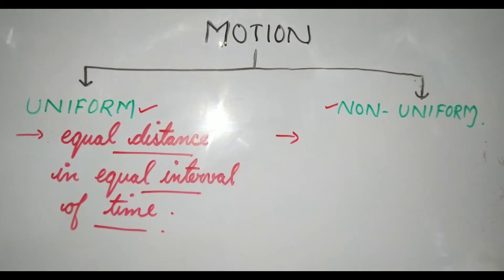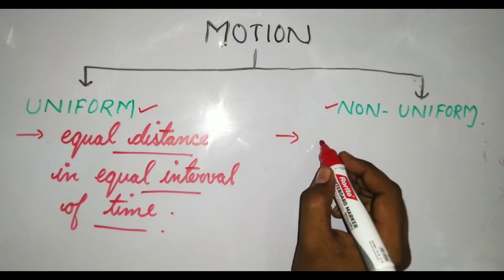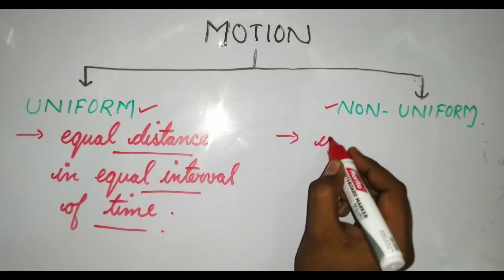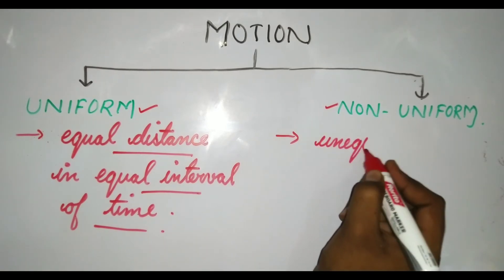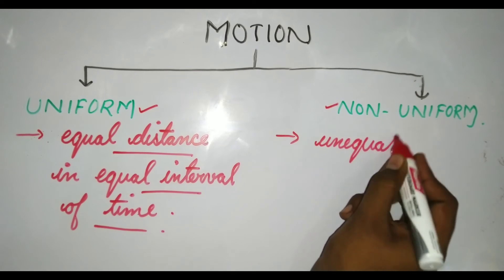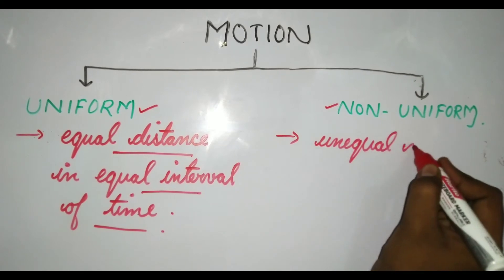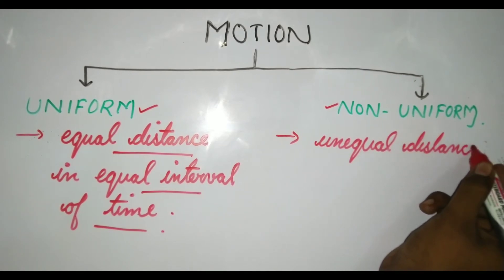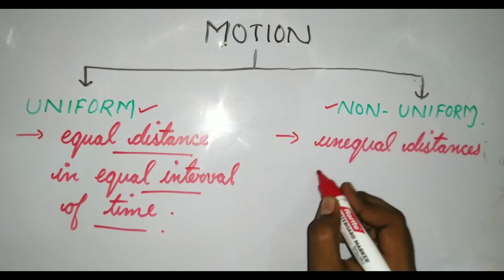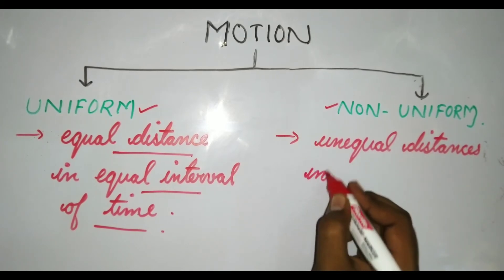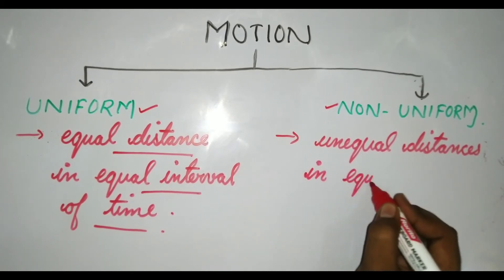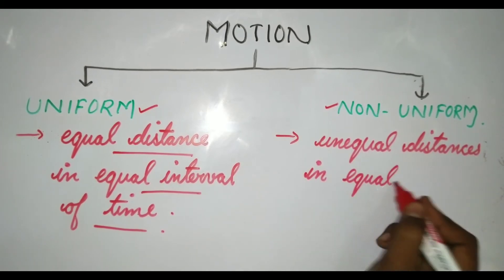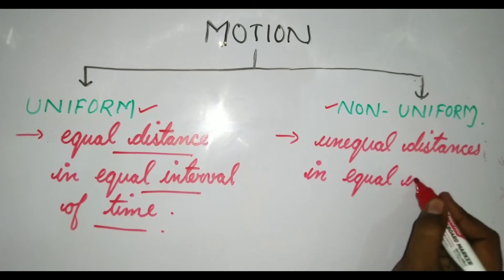Non-uniform motion is the opposite — the object covers unequal distances in equal interval of time. The time interval remains the same, but the distance changes unequally.